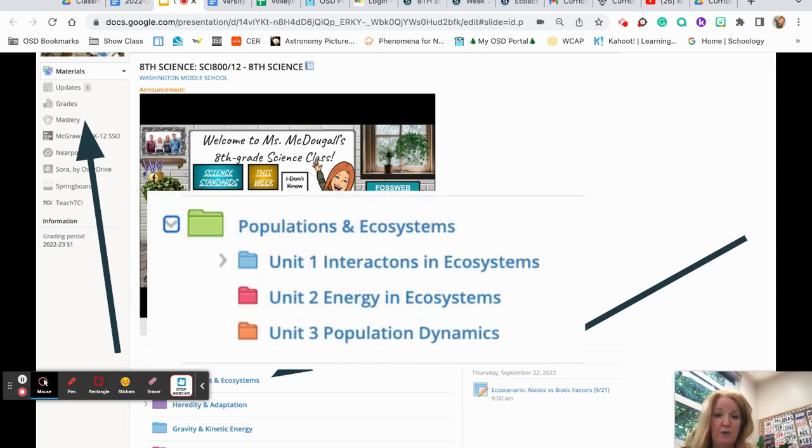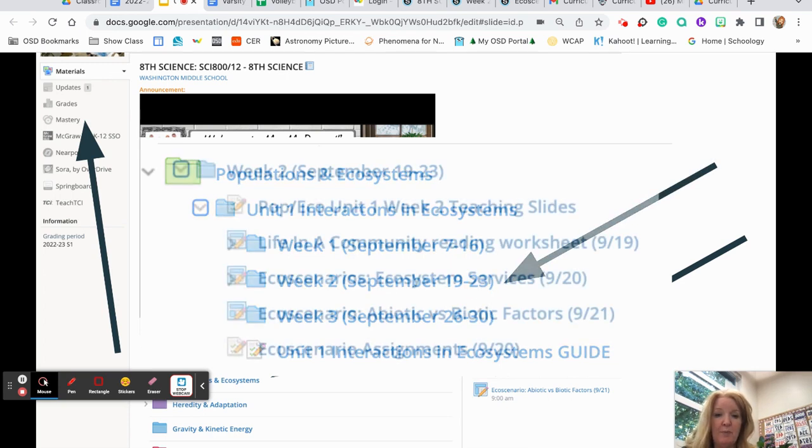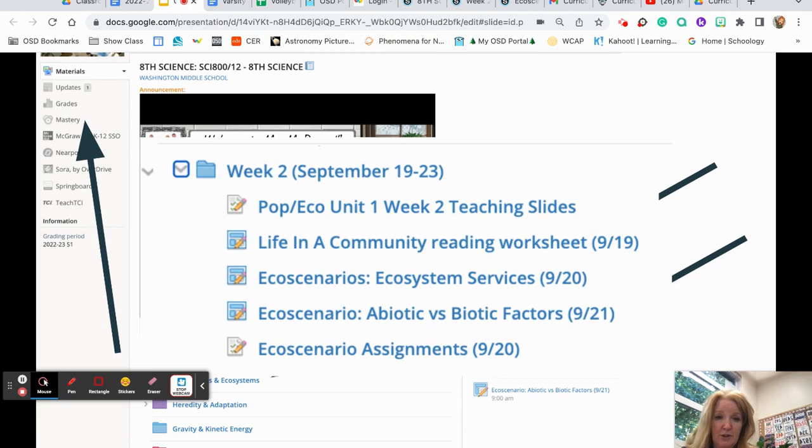When you open the folders in Schoology, for instance, right now we're studying populations and ecosystems. They're organized by unit. There are three units in this topic. And right now we're in unit one, which is interactions and ecosystems. And inside that folder, everything's organized by week with the dates given. So currently right now it is week two. And when you open up a week in there, you'll see all the materials needed to do any of the work we did that week.